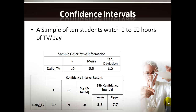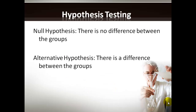The important thing is to be able to interpret a confidence interval. Hypothesis testing is used when we're trying to compare groups. When comparing means between two groups, the null hypothesis is that there is no difference between the groups, and the alternative hypothesis is that there is a difference. Generally, when we do statistical tests, we're trying to find evidence for or against the null hypothesis.